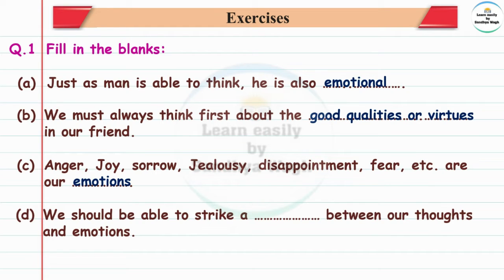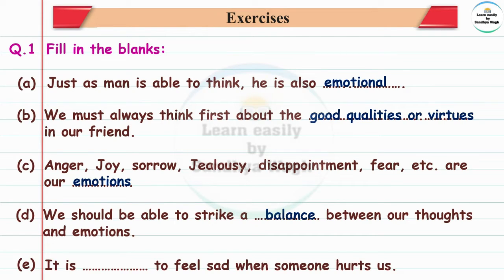Next blank: We should be able to strike a — dash — between our thoughts and emotions. The answer is balance — meaning samatol. We should be able to strike a balance between our thoughts and emotions. Next: It is — dash — to feel sad when someone hurts us. The answer is: it is natural to feel sad when someone hurts us.